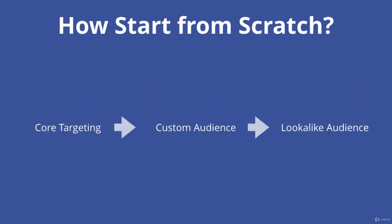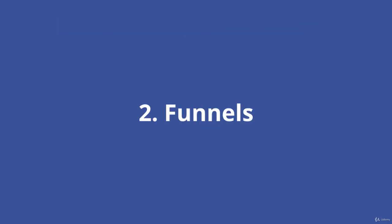So how would you start from scratch? You might run an ad using core targeting interests first, get those people to come to your website or look at your app, create a custom audience of those people, and then on the back of that create a lookalike audience. It is a process you can build up and take advantage of all these types of audience even if you're starting from scratch right now. That wraps up the first key to success, which is targeting.